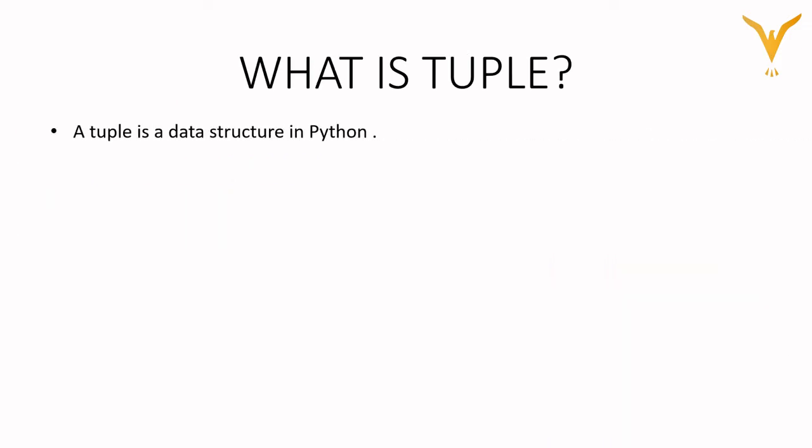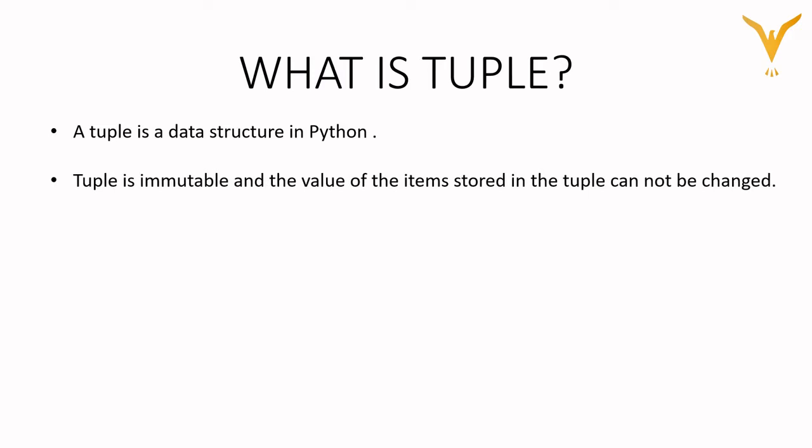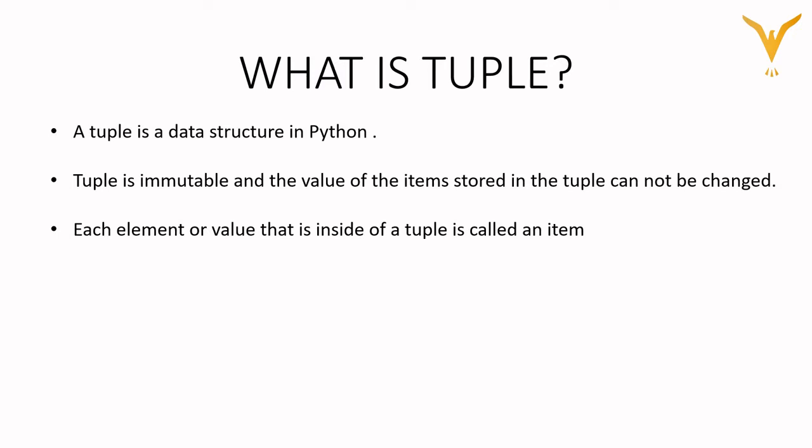What is tuple? Tuple is a Python data structure. It is called as immutable. What do you mean by immutable? Immutable means the value or the item which we stored inside a tuple cannot be changed. Each and every element which we stored inside a tuple is called as an item.